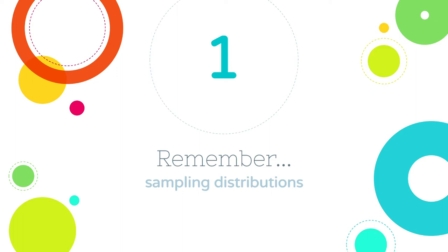Learning about these things allows us to make connections to test values — to see whether a sample statistic, such as a sample mean, is not what we would expect, is an extremely different value. That allows us to do things like test for treatment effects, compare groups like boys to girls, and all kinds of other things.